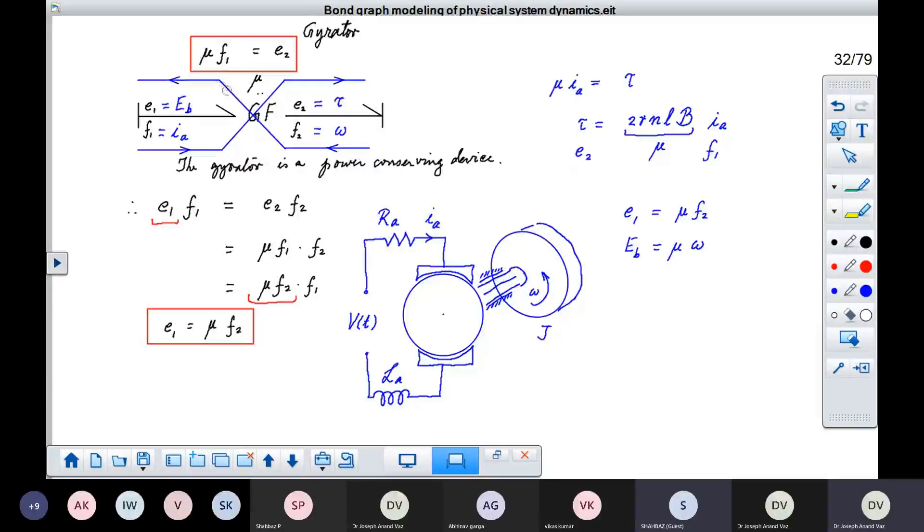What happens is when you place a conductor in a magnetic field and you pass a current through it, it experiences a force resulting in the development of a torque in this particular case. But because the conductor moves due to the application of this force, a potential difference is experienced across the conductor.